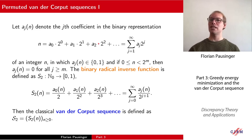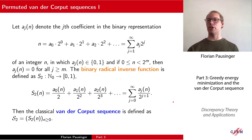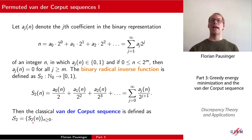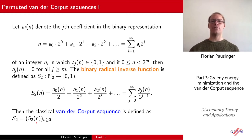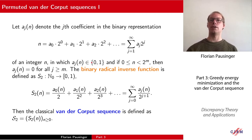The binary radical inverse function takes the binary representation of n and divides every summand by a power of two which is one larger than the index of the coefficient in the binary representation. The van der Corput sequence is defined as the values of the radical inverse function when you input increasing integers. The first few elements are one-half, one-quarter, three-quarters, then one-eighth, five-eighths, three-eighths, seven-eighths, and so on — a ping-pong of points arising from the base-two representation of integers.